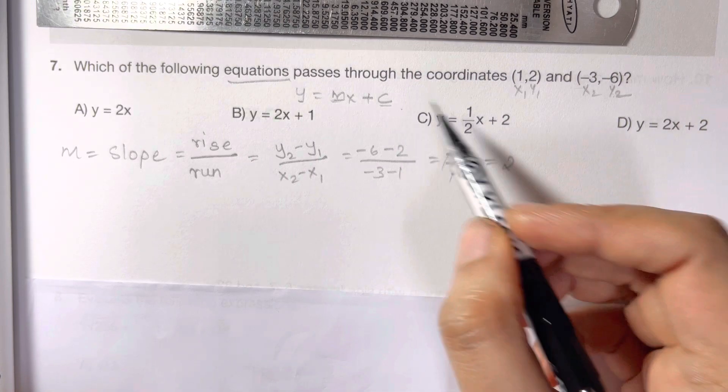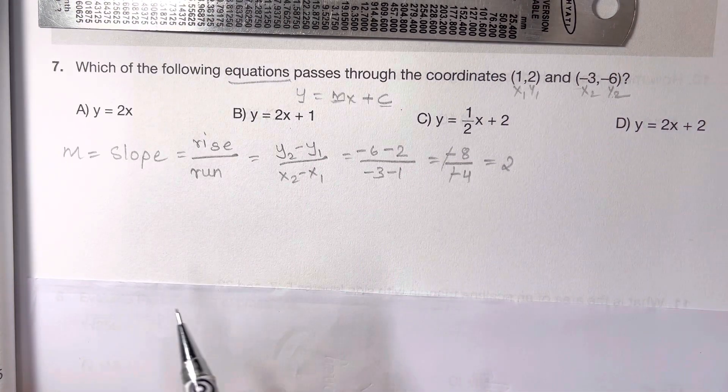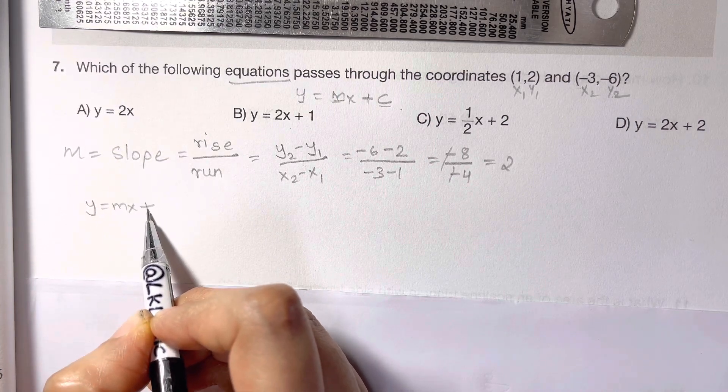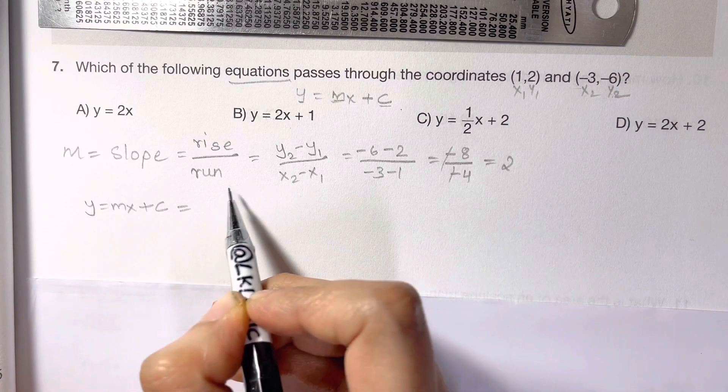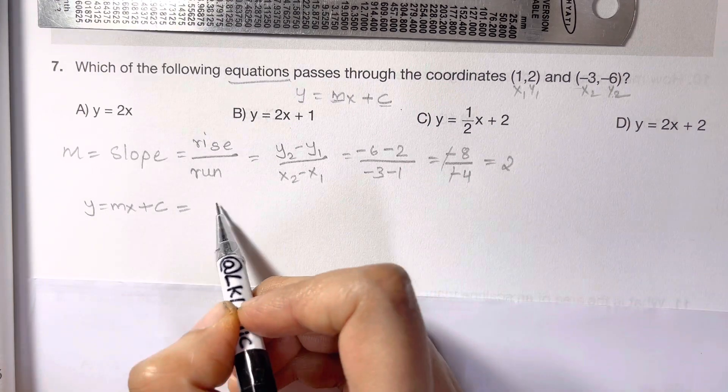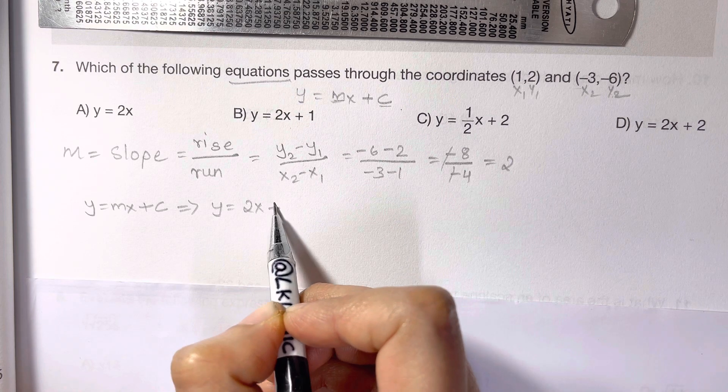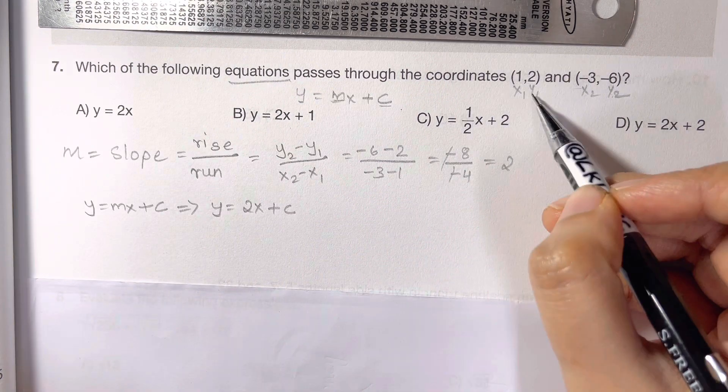Now you just have to find the y-intercept. To find the y-intercept, you write the equation y equals mx plus c and then you just substitute the slope what you have got. Y equals 2x plus c.